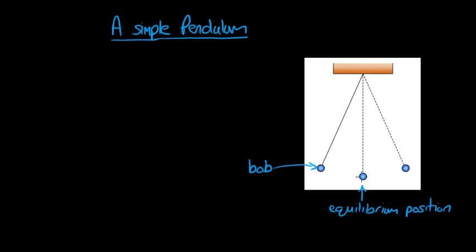So if you bring the bob to one side and then release it, it will start to describe a motion backwards and forwards, and that's an example of oscillating motion.